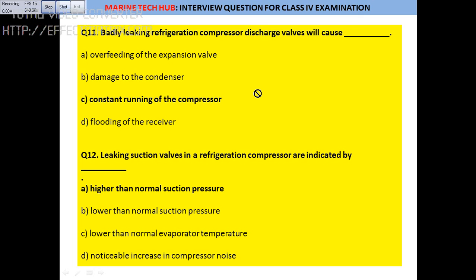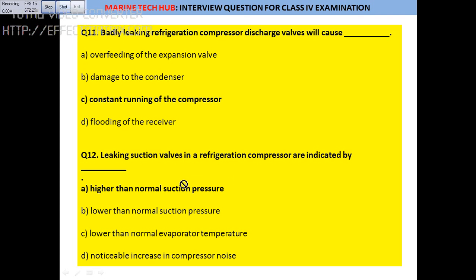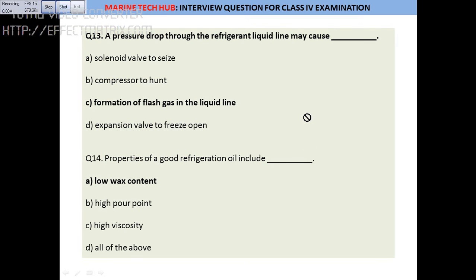Question 11: A badly leaking refrigeration compressor discharge valve will cause the compressor to run for a longer time — constant running. If there is a leakage in the suction valve of the compressor, that will indicate higher than normal suction pressure. The answer is option A.